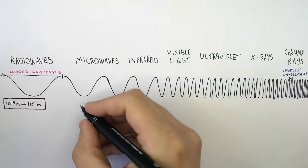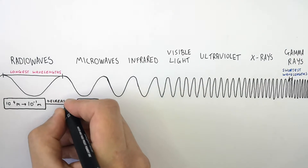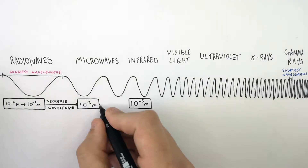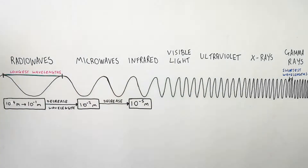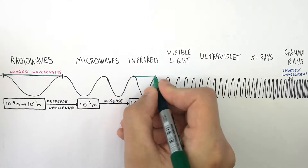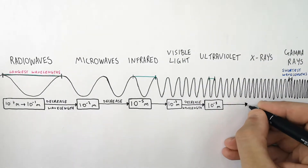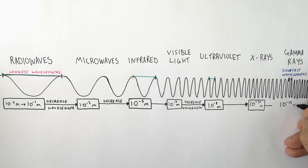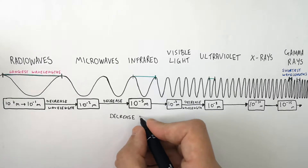As we go down the electromagnetic spectrum from radio waves to microwaves, the wavelength gets shorter — there's a decrease in wavelength. Infrared waves are shorter than radio waves. Ultraviolet wavelengths are shorter still. And as you go to x-rays and then gamma rays, you find the shortest wavelengths, which are gamma rays, as short as 10 to the minus 15 meters. So as you move down the electromagnetic spectrum from radio waves to gamma rays, you're going to decrease the wavelength.